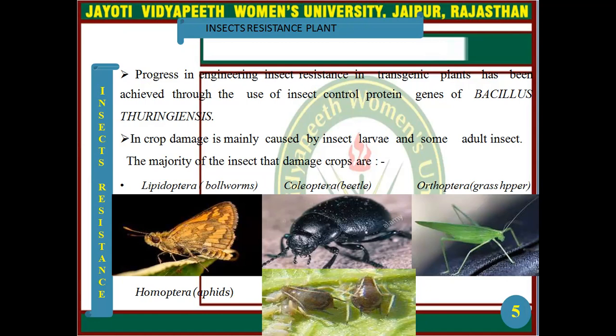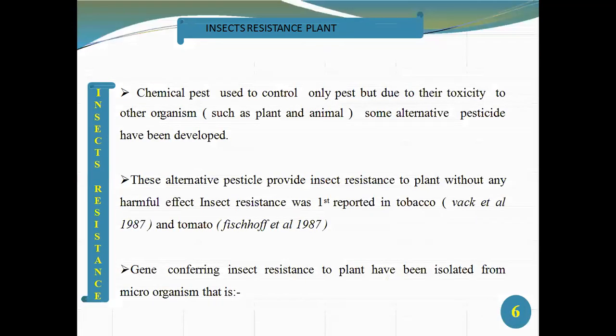The majority of insects that damage crops are Lepidoptera, Coleoptera, Orthoptera, and Homoptera. Chemical pesticides were used to control pests, but due to their toxicity to other organisms, alternative pesticides have been developed. These alternative pesticides provide insect resistance to plants without any harmful effect.